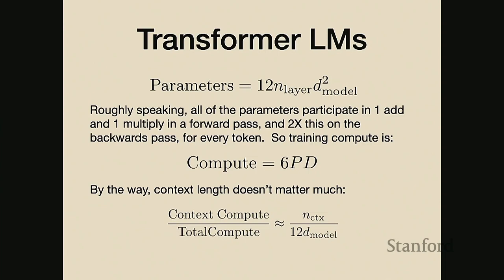How much computation do you actually do when you train this kind of model? Transformers are actually quite simple: in a forward pass, every parameter on every token performs roughly one add and one multiply, and about twice this in the backward pass. This gives a very simple formula: the number of floating point operations during training is 6 (which is 2 times 1 plus 2) times the number of parameters in the model times the number of tokens in the dataset.